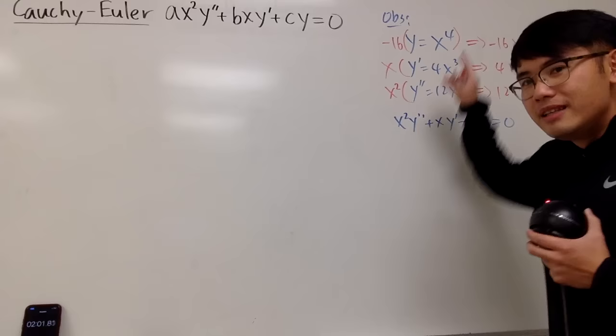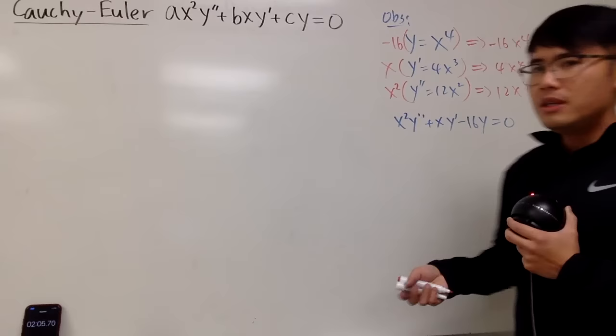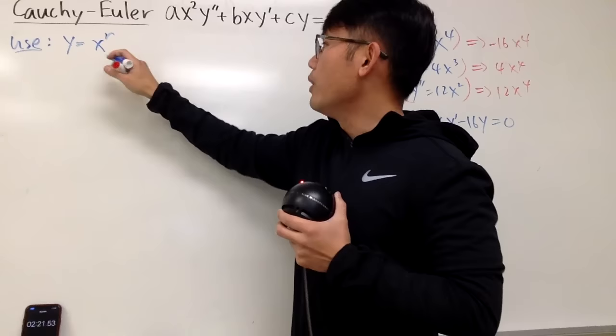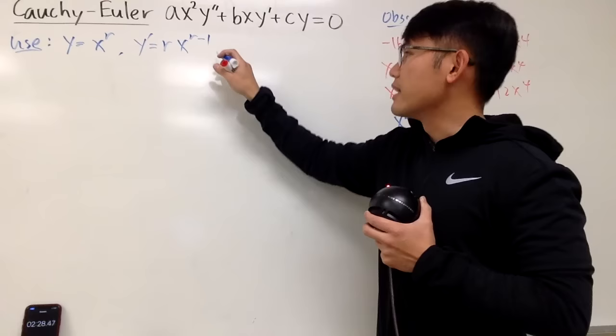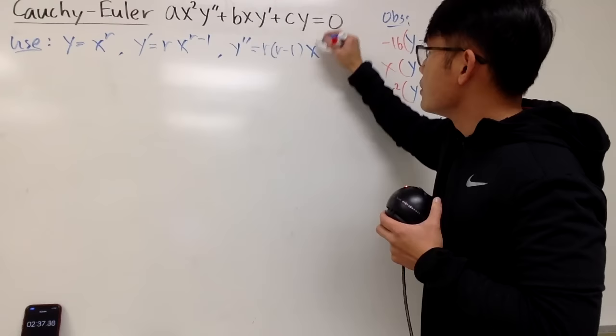This observation tells us an important point: y should be a power function, x to the power r, because this will work out nicely. Let's figure that out. Suppose I start with y = x^r. The first derivative is r·x^(r−1), and the second derivative is r(r−1)·x^(r−2).